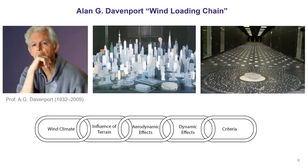The genius of Alan Davenport is that, in addition to understanding these complex processes, he had his own way of communicating it to engineers, architects, and policy makers in the most simplistic way. One example that exemplifies this simplicity is the wind load chain. If you are interested in assessing the impact of any microclimate on a particular building or community, you have to go through different steps. First, you have to know the wind climate — the first element in the load chain. For example, if you are studying a hurricane, you need to know the frequency, the wind speed, the maximum wind speed near the ground, and the statistics over the period.